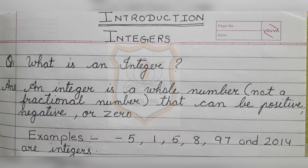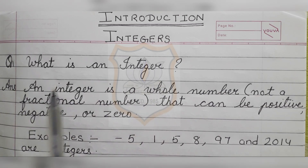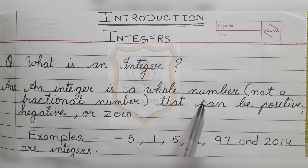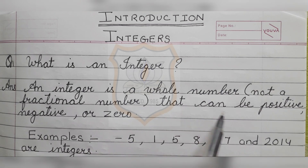The first question that arises in your mind is: what is an integer? You have to write this definition in your notebook. The definition of an integer is: an integer is a whole number, not a fractional number. The most important thing is that integers are whole numbers — like 1, 2, 3, 4 or minus 1, minus 2, minus 3, and zero. Fractional numbers like 1/2 or 3/4 are not integers. Integers can be positive, negative, or zero.